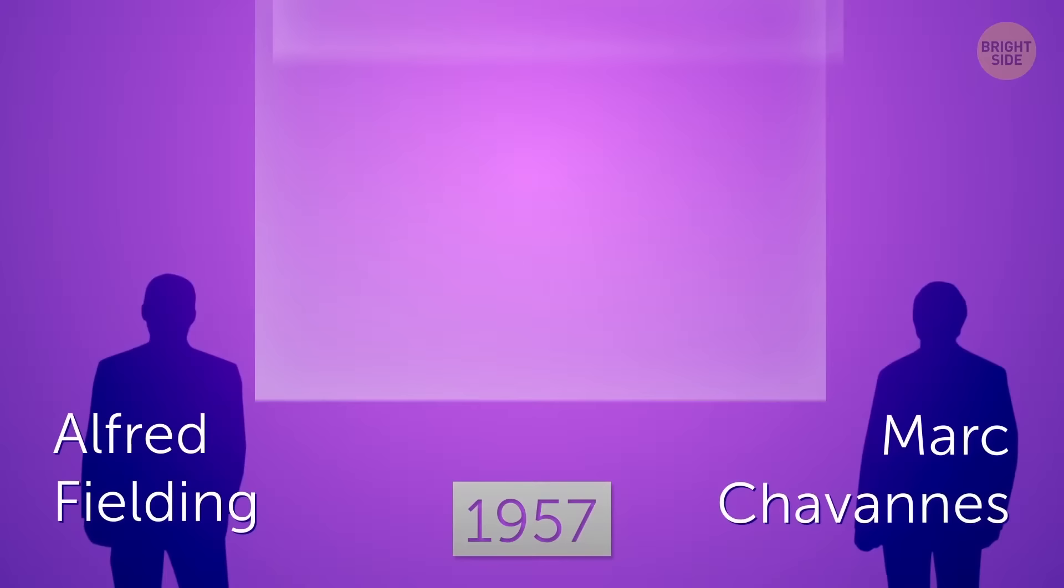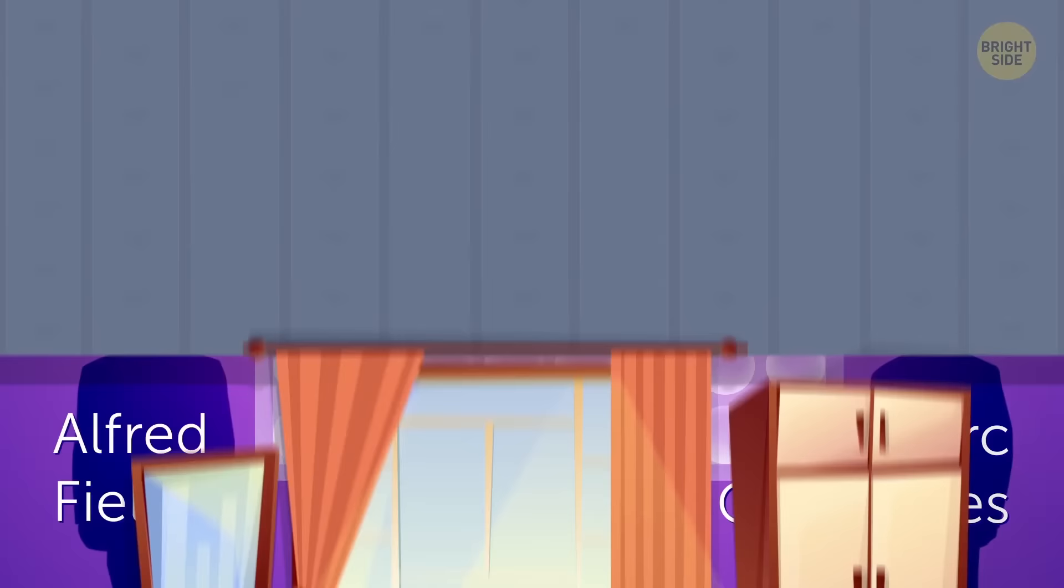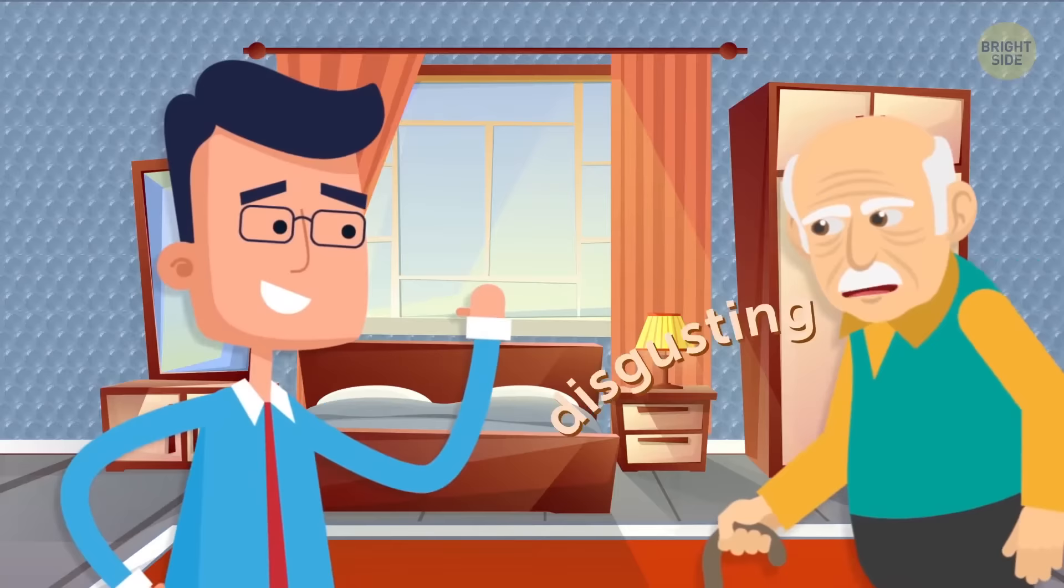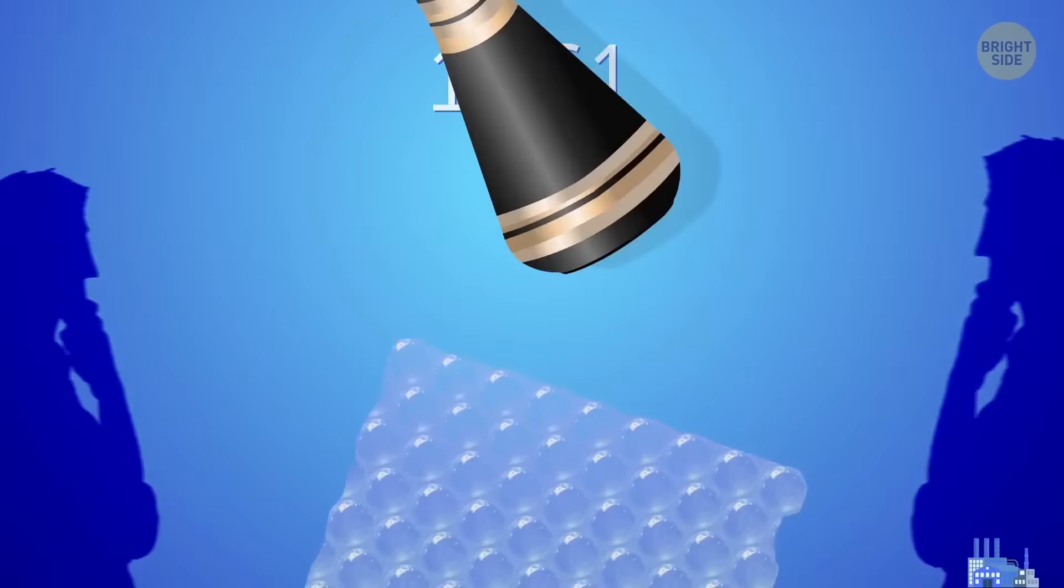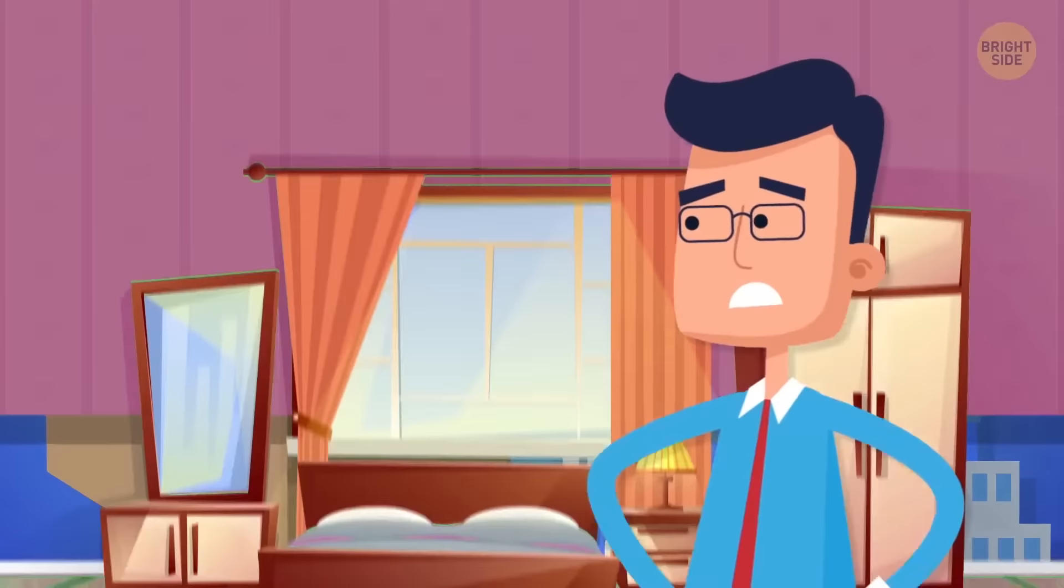engineers Alfred Fielding and Marc Chavanez decided to seal two shower curtains together with tiny bubbles of air stuck in between. Why? It was supposed to be a cool new idea for wallpaper. Unfortunately for them, nobody was interested in bubbly wall decor. But in 1961, people realized that this bubble wrap could be great protection for fragile things. The company's first client was IBM, who used the stuff to cover their computers during shipment.